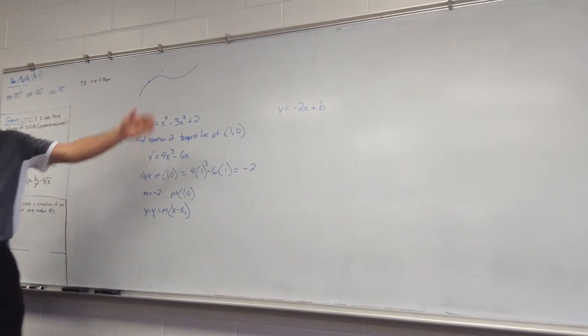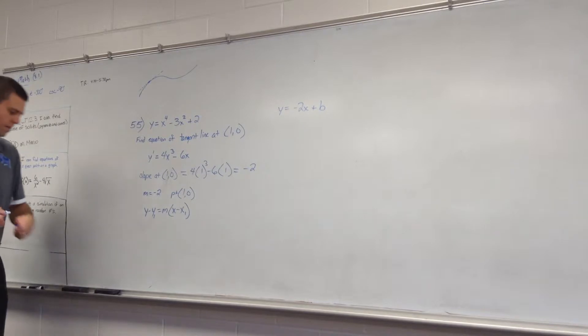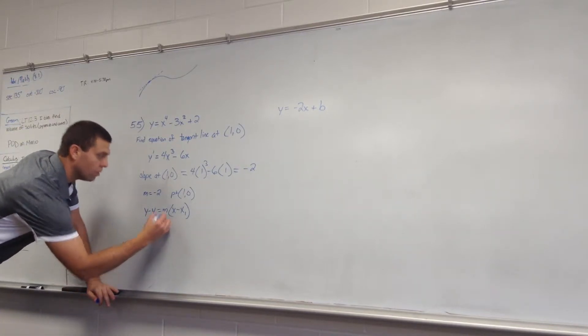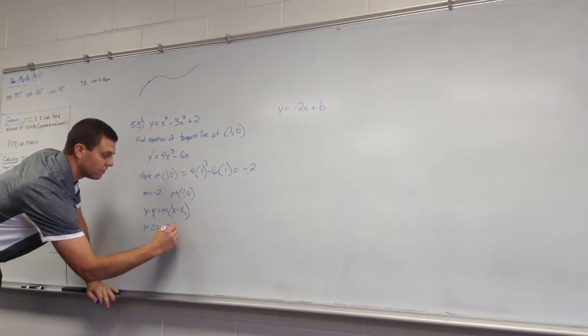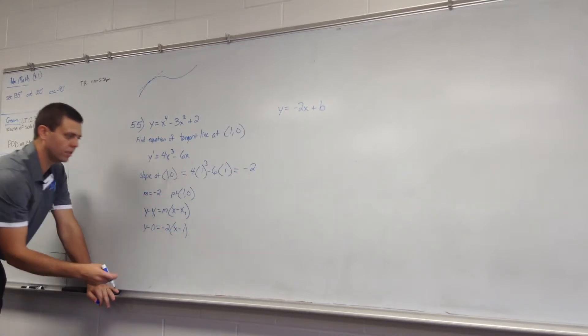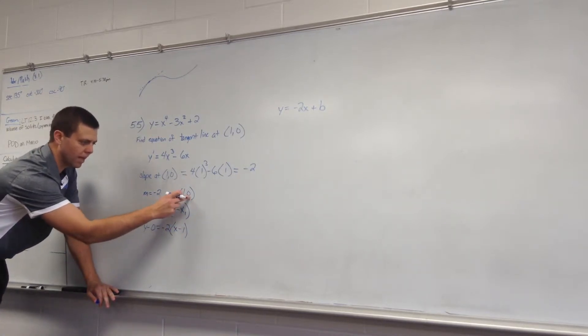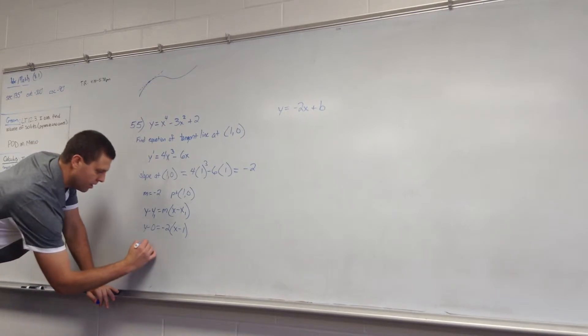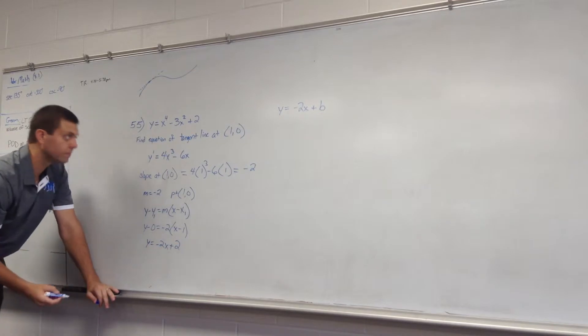Okay, if you don't recall this though and you want to use y equals mx plus b, go for it, all right? So y minus 0 equals my slope is negative 2, parenthesis x minus 1, because I plug in that for x1 and that for y1. And you get y equals, that doesn't matter, negative 2x plus 2. Good.